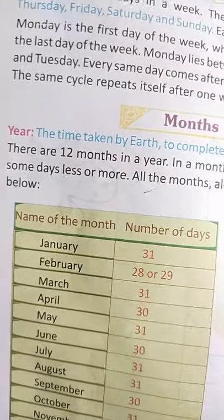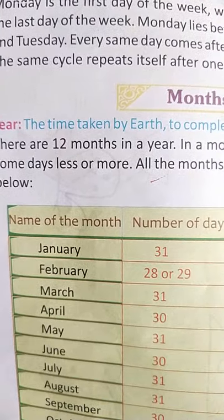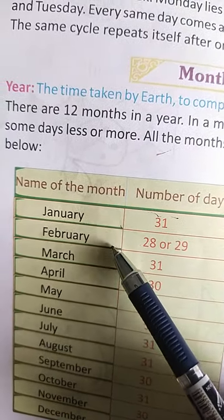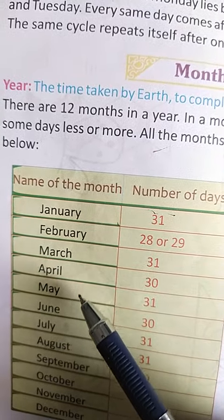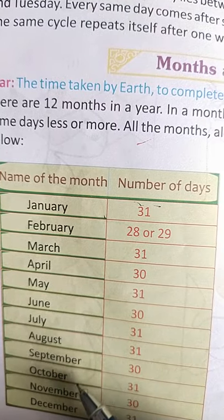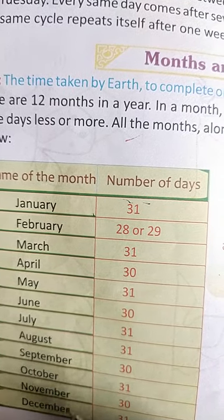Months and Year: there are 12 months in a year. January, February, March, April, May, June, July, August, September, October, November, and December.